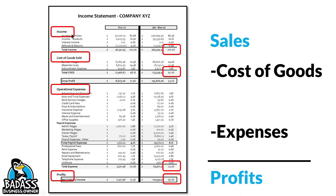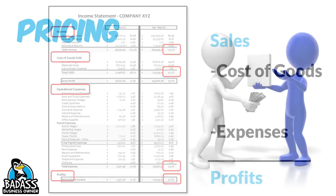We do have the gross profit line — all it is, is just letting you know the difference between sales and cost of goods. But your four main sections are sales minus cost of goods minus expenses equals those profits. For small business owners, the only things you really need to remember are sales minus cost of goods minus expenses equals profits. When you start to hit the big time, you can learn about all those other lines like EBITDAs and all that other stuff — it's just basically this thing on steroids that you can learn as you become bigger and bigger.